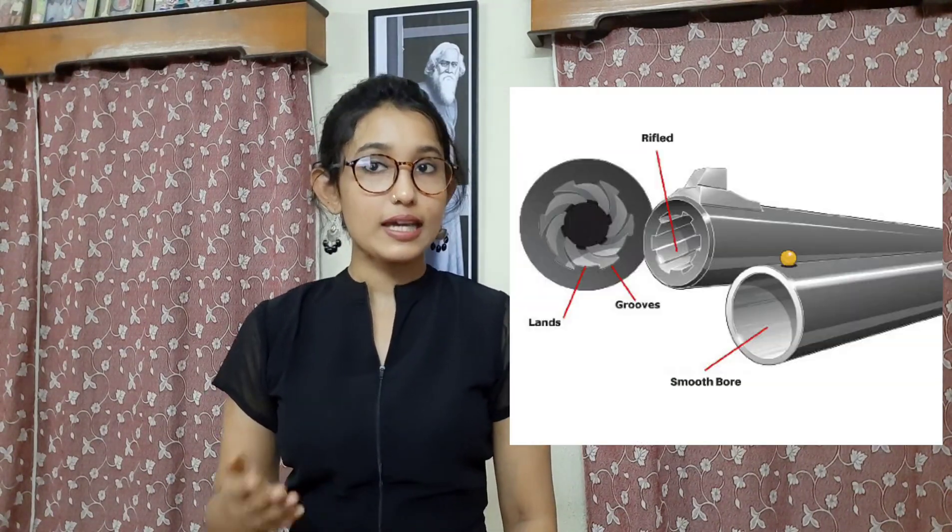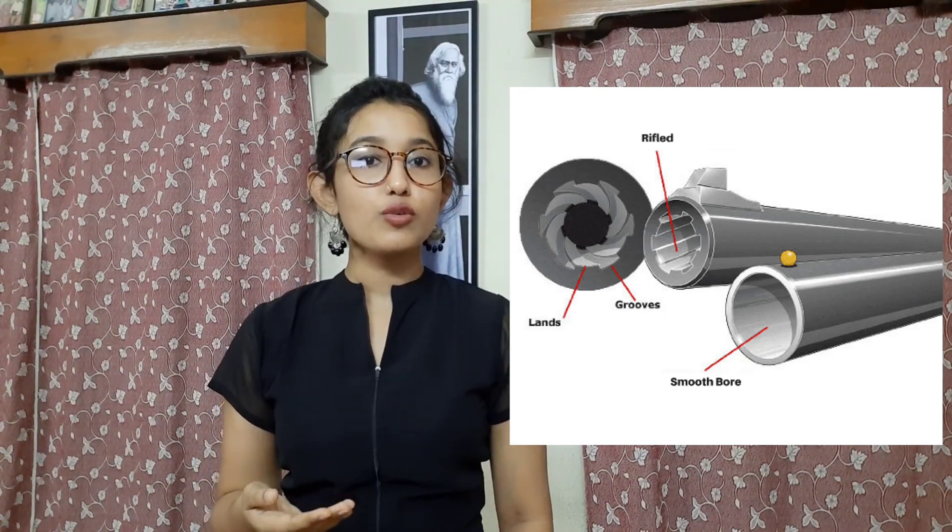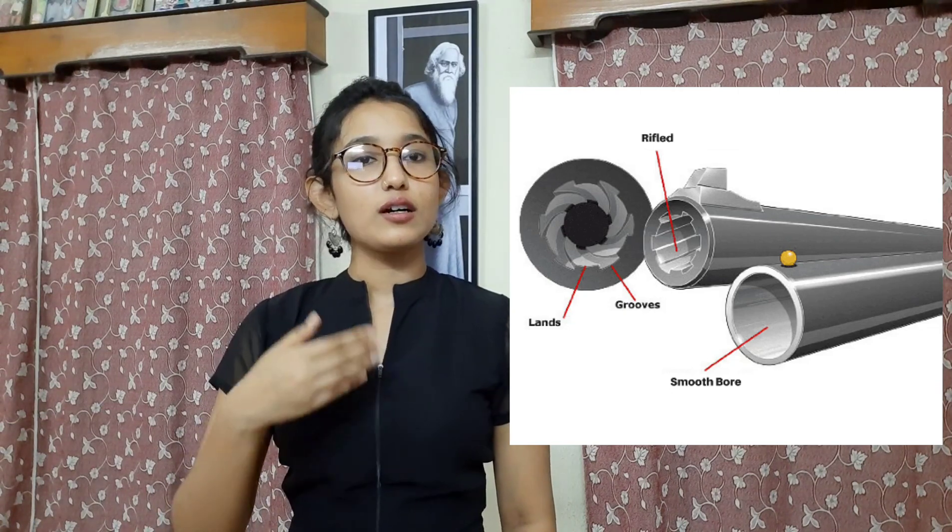Firearms can be classified based on bore characteristics into two types: smoothbore firearms and rifled bore firearms. Rifled bore firearms have barrels with rifling — the insides have cut and uncut portions known as grooves and lands respectively — which gives the bullet a spinning or gyroscopic motion, helping it travel longer distances in a straight path. The main ammunition of rifled firearms are bullets; examples include AK-47 and pistols.